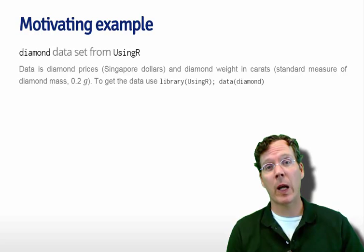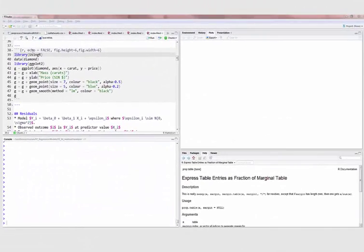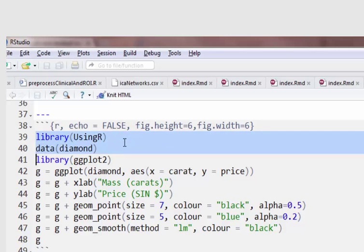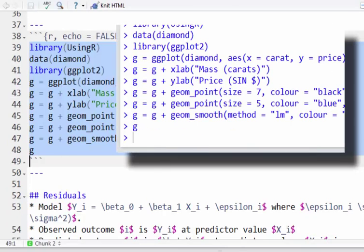We'd like to talk about how we can explain variation in diamond prices using their mass. Let me generate a plot. Last time I went through the commands for generating the plot, so I won't do this again, but here's my ggplot. Let me zoom out.